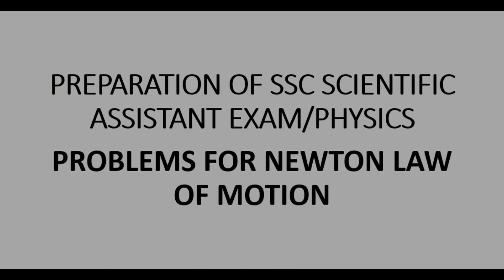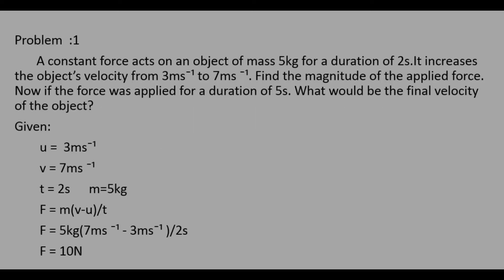Hi friends. In this video we see some problems related to Newton's law of motion. The first problem is: a constant force acts on an object of mass 5 kg for a duration of 2 seconds. It increases the object's velocity from 3 m/s to 7 m/s. Find the magnitude of the applied force. Now, if the force was applied for a duration of 5 seconds, what would be the final velocity of the object?